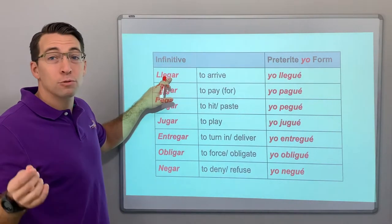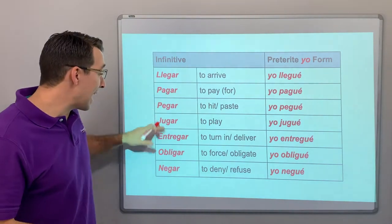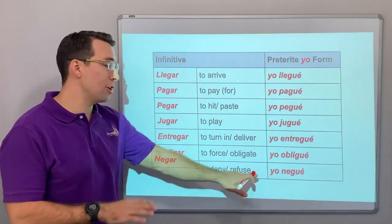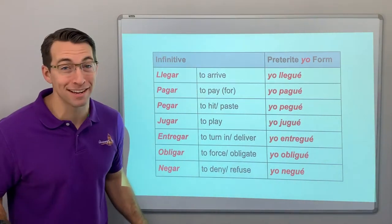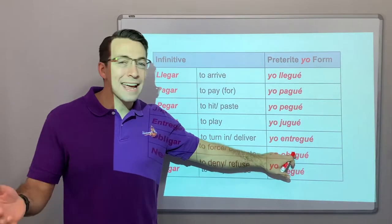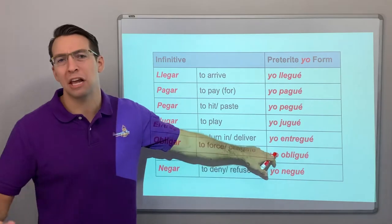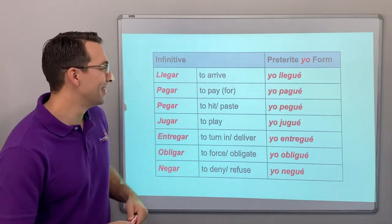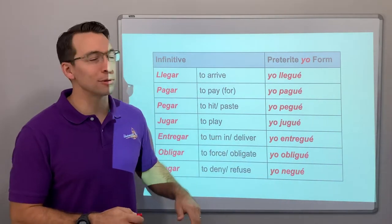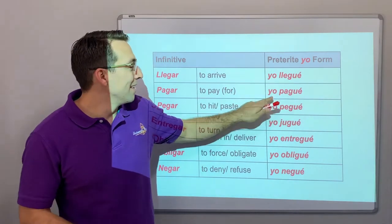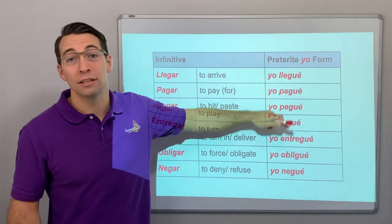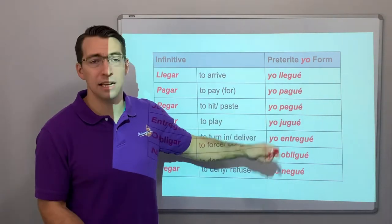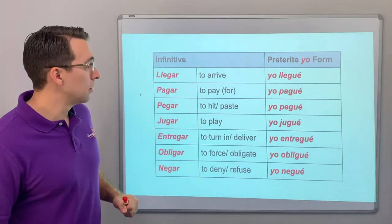Common -gar verbs: llegar, pagar, pegar, jugar, entregar, obligar, negar — to deny. Yo negué todo — I denied everything. Yo obligué a ella — I forced her, I obligated her to complete my homework. Yo llegué. Yo pagué la cuenta anoche — I paid the bill last night. Yo pegué, yo lo pegué — I hit him. I'm a boxer.